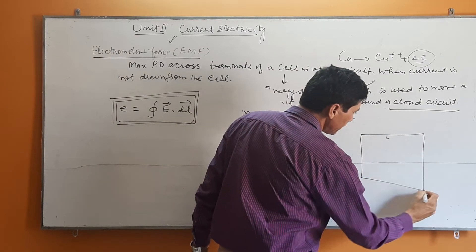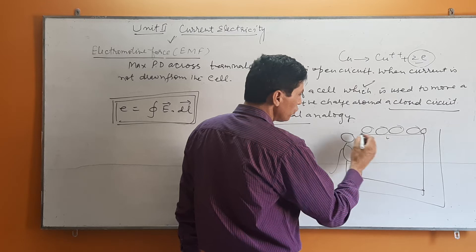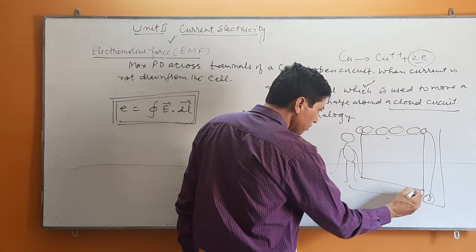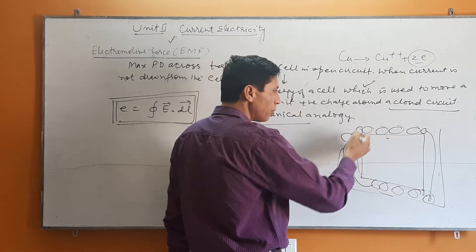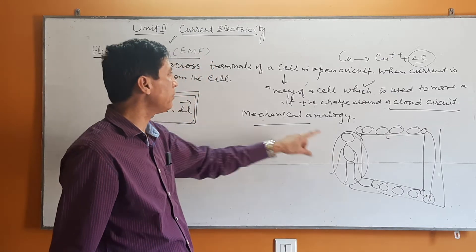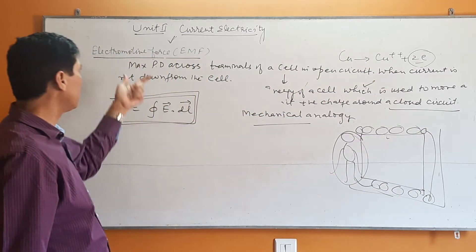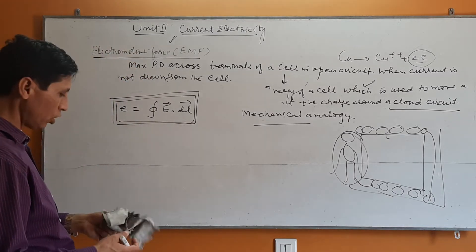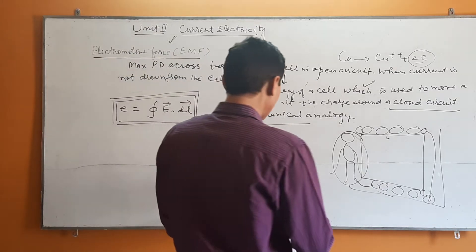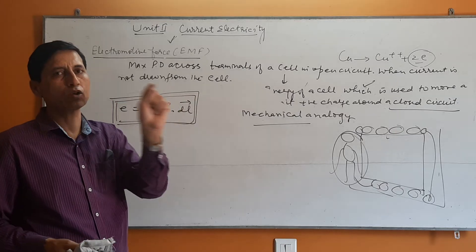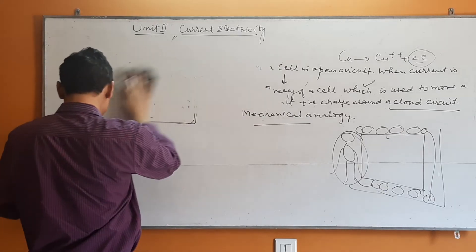A mechanical analogy for EMF: suppose there is a table with balls on it. When a ball falls down, a person lifts it back up and places it on the table, and it falls again — there is a continuous flow of the ball due to this person. The same role is played by the cell — the cell maintains the continuous flow of charge through the circuit. This is the meaning of electromotive force. EMF is the maximum terminal potential difference in an open circuit when current is not drawn from the cell, for example a dry cell of 1.5 volts.